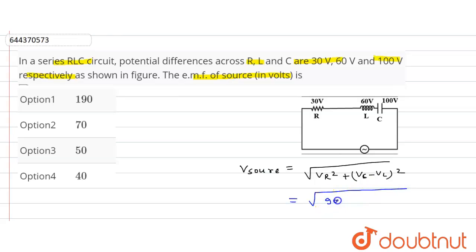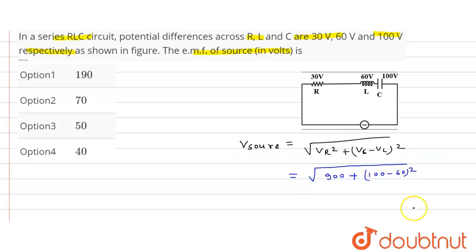So 30 squared, that is equal to 900, plus VC is 60, sorry VC is 100, 100 minus 60 squared, that is 40 squared. So from here this will be how much? 900 plus this will be 40, 40 squared, that is 1600.